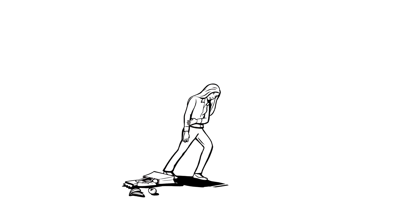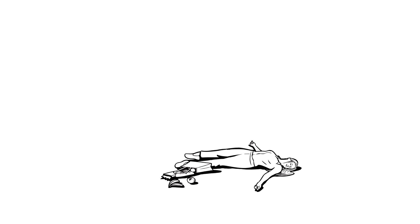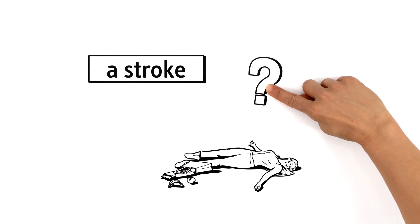It all happened so fast. Maya's right arm suddenly went numb and she slumped to the ground. Diagnosis? A stroke. But what does that mean exactly?